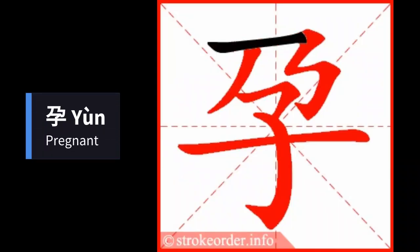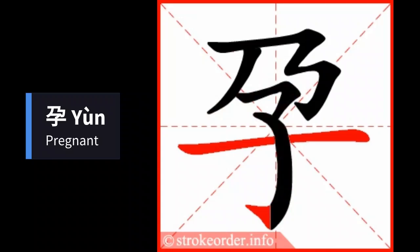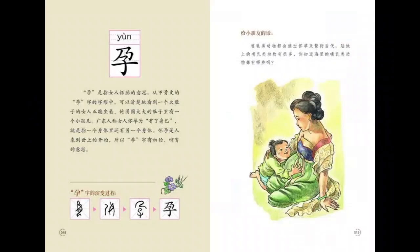In today's video, we'll teach you the Chinese character for pregnant. The pronunciation is 孕. This is a fun character in the Chinese language because the character 孕 was originally a woman kneeling with a child in her belly, that gradually morphed into its modern form. This makes it easier to learn.